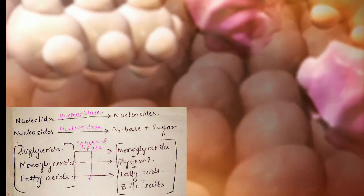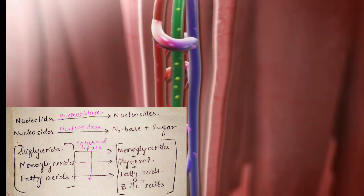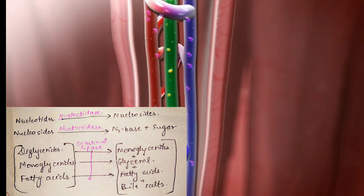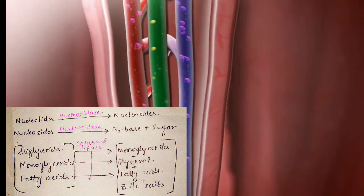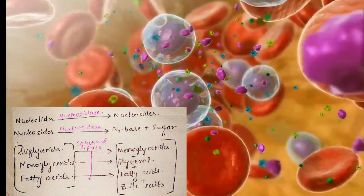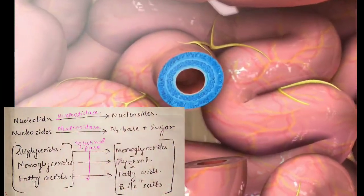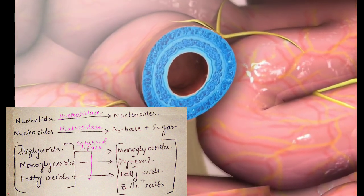Intestinal juice has nucleotidase and nucleosidase to break nucleotides into nucleosides and nucleosides into sugars and nitrogenous bases. And for complete emulsification of fats, the intestinal juice has intestinal lipase to break diglycerides, monoglycerides, and fatty acids into monoglycerides, glycerol, fatty acids, and bile salts, and these further form micelles to get absorbed.